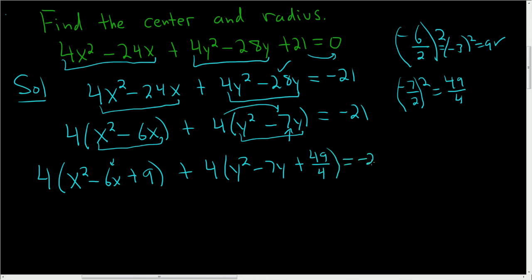And over here we get -21. Now here's the tricky part where everyone messes up. Did we really add a 9 here? No, we added 4 times 9. So you have to add 36, which is 4 times 9, to the other side. Same thing here. Did we really add 49/4? No, we added 4 times that. So 4 times 49/4 is just 49.